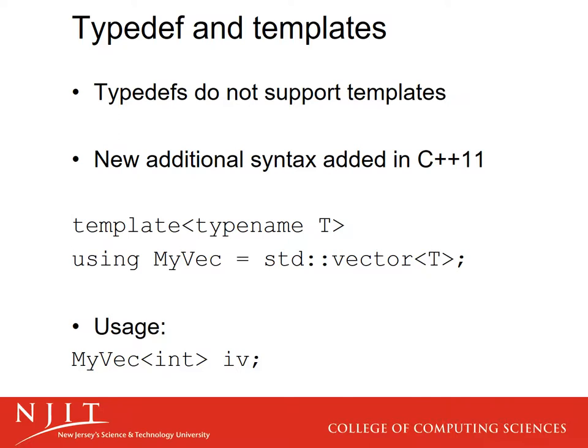So they had to add a new syntax in C++11 to support templates. You've seen 'using namespace something' — this is an extension of that. You can say 'template <typename T> using myVec = std::vector<T>', which is basically a way of templating a typedef. It means there are now two different ways to do typedefs. You can also say 'using integer = int'. Who knows — maybe they'll deprecate typedef. But if you want to typedef something that uses templates, you must use this new syntax.